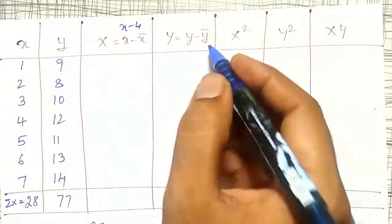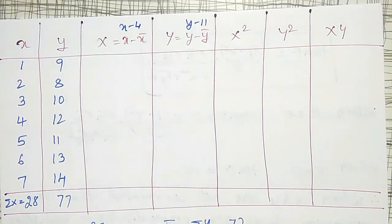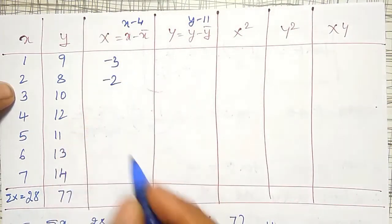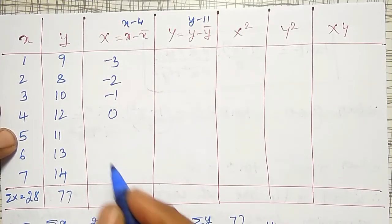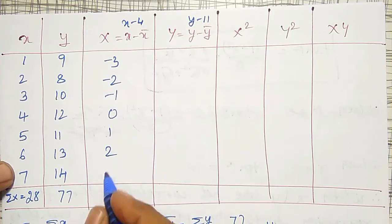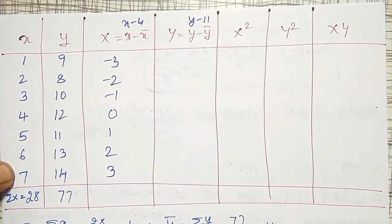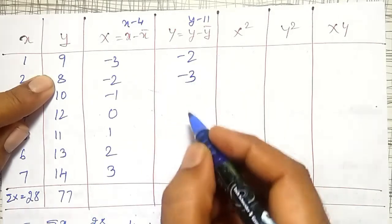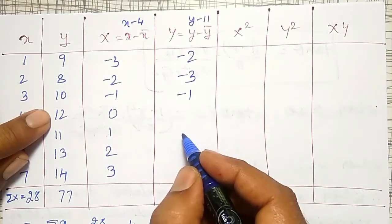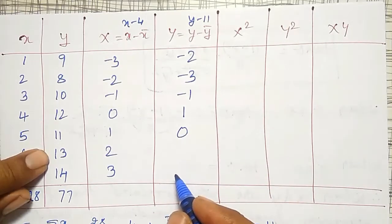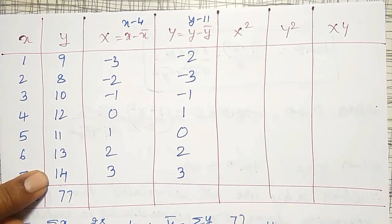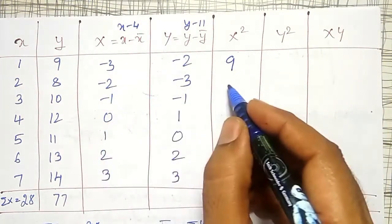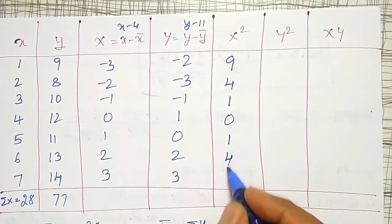So capital X is x minus 4, and capital Y is y minus 11. For capital X: 1 minus 4 = −3, 2 minus 4 = −2, 3 minus 4 = −1, 4 minus 4 = 0, 5 minus 4 = 1, 6 minus 4 = 2, 7 minus 4 = 3. For capital Y: 9 minus 11 = −2, 8 minus 11 = −3, 10 minus 11 = −1, 12 minus 11 = 1, 11 minus 11 = 0, 13 minus 11 = 2, 14 minus 11 = 3. The X squared values are: 9, 4, 1, 0, 1, 4, 9.